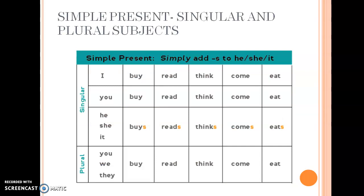For all singular subjects you add s or es to the verb; for plural subjects there is no s or es. He, she, it: buys, reads, thinks. I, you, we, they: think, read, buy. Remember, I and you follow the same rule pattern as plural subjects — though they are singular, they come with a verb without s or es. Singular subjects like he, she, it are followed by a verb with s or es.